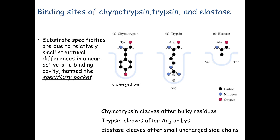Here are three examples: chymotrypsin, trypsin, and elastase. While all three do the exact same chemistry — using a water molecule to hydrolyze the peptide bond, making them hydrolases — they are very selective about which peptide bond they cleave. They take advantage of the target protein's sequence. Just before the peptide bond that gets cleaved, there's an amino acid, and depending on what that amino acid is, it's selected for or against by these three enzymes.